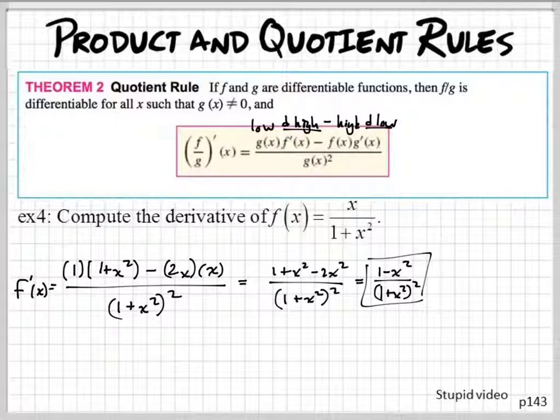And then high D low. Okay, so you take the derivative of the low, take the derivative of the high. You always do the derivative of the high first. So low D high, high D low. You guys got that?